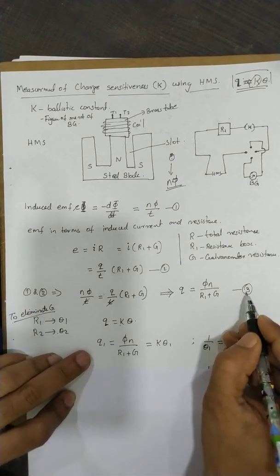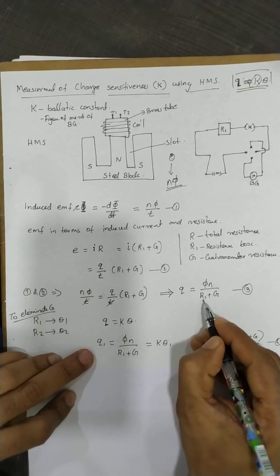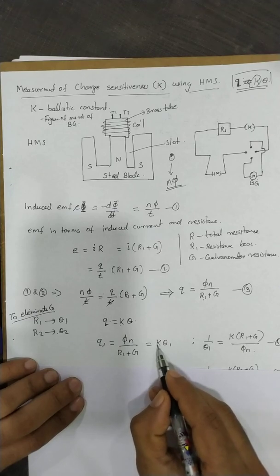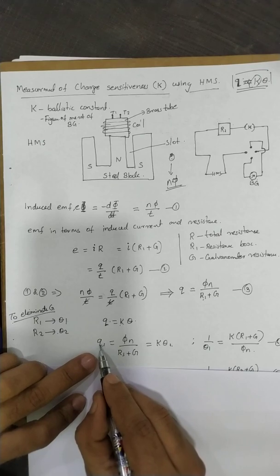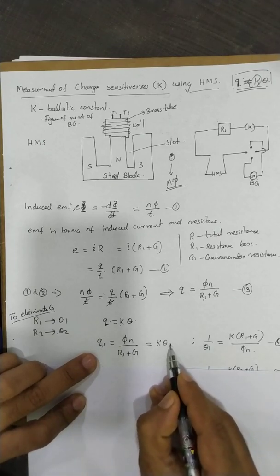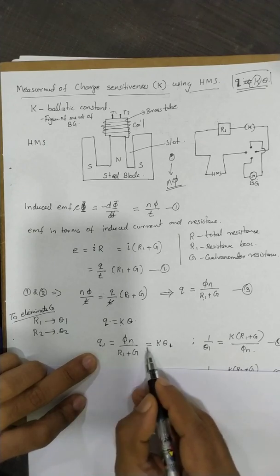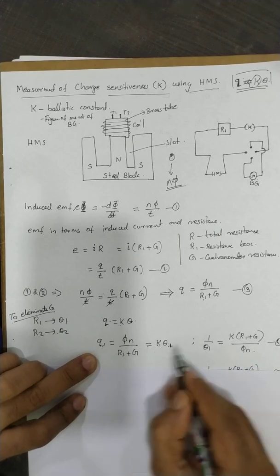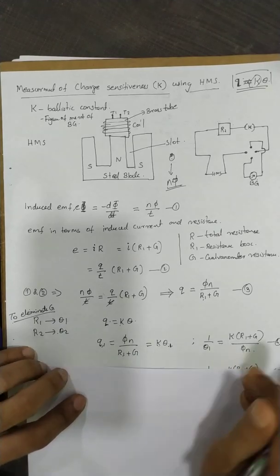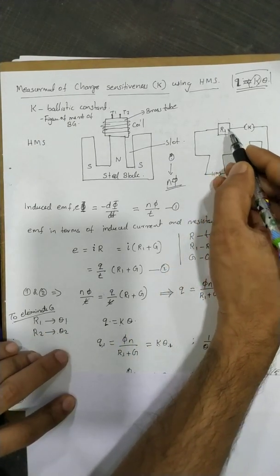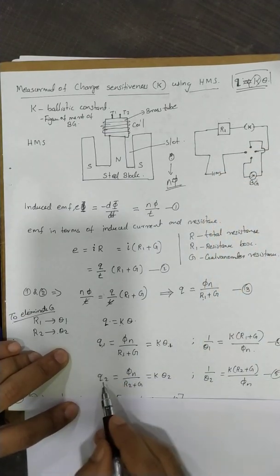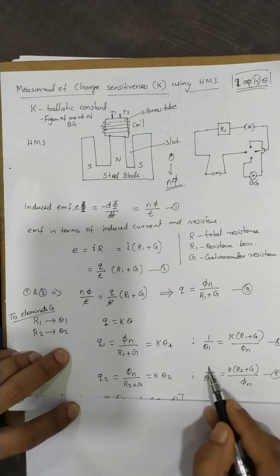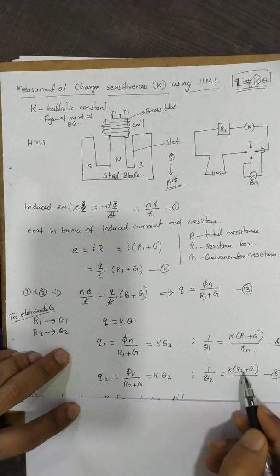For the first trial, from equation 3, Q1 equals nΦ divided by (R1 + G), which also equals Kθ1. Therefore, 1/θ1 equals K(R1 + G) divided by nΦ — this is equation 4. For the second trial, Q2 equals nΦ divided by (R2 + G), which equals Kθ2, giving 1/θ2 equals K(R2 + G) divided by nΦ.